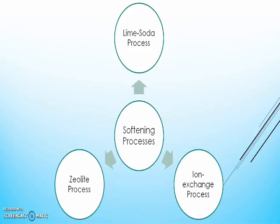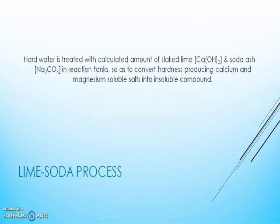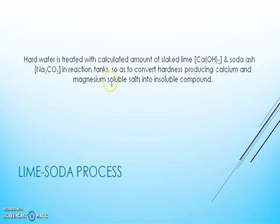Let's see how the lime soda process works. In this process, hard water is treated with a calculated amount of lime, that is calcium hydroxide, and soda ash, that is sodium carbonate, in a reaction tank, so as to convert hardness producing calcium and magnesium soluble salts into insoluble compounds.